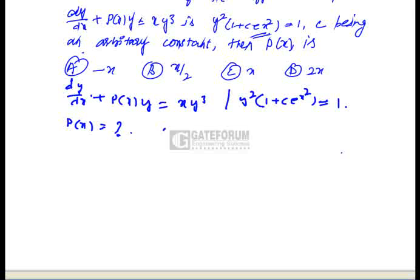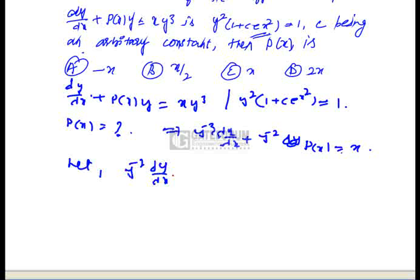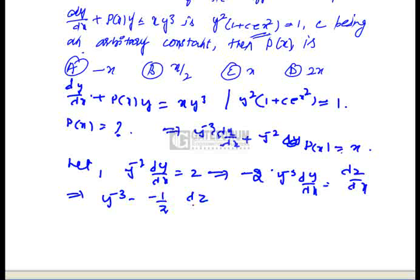Dividing by y³ gives: y⁻³·(dy/dx) + y⁻²·p(x) = x. Now let z = y⁻², then differentiating gives dz/dx = -2·y⁻³·(dy/dx), so y⁻³·(dy/dx) = (-1/2)·(dz/dx).